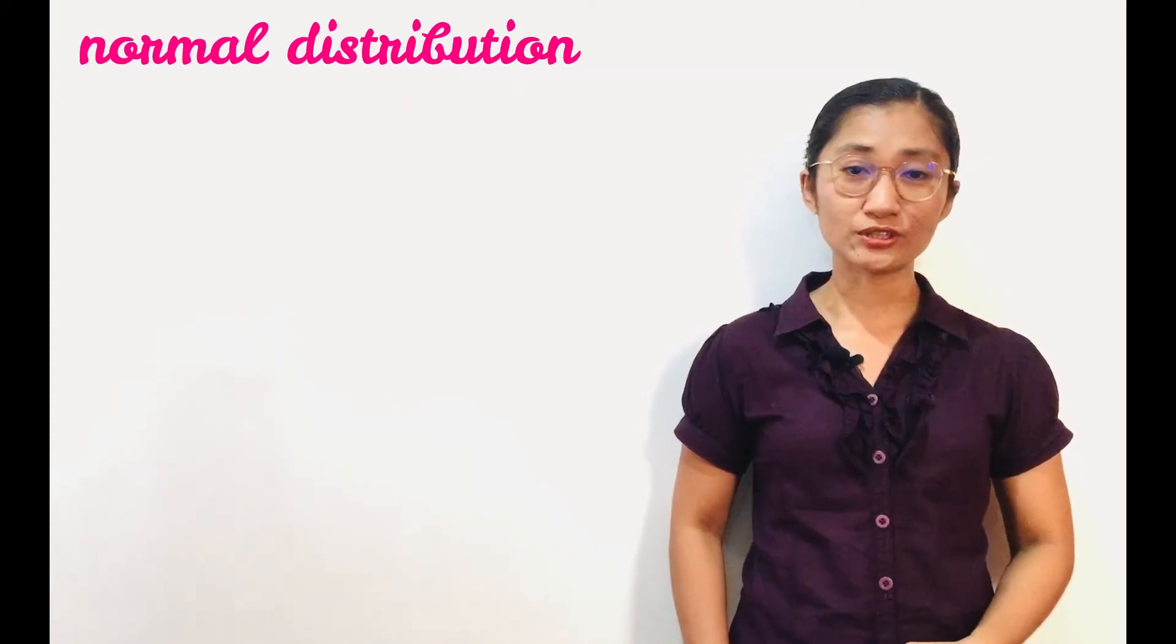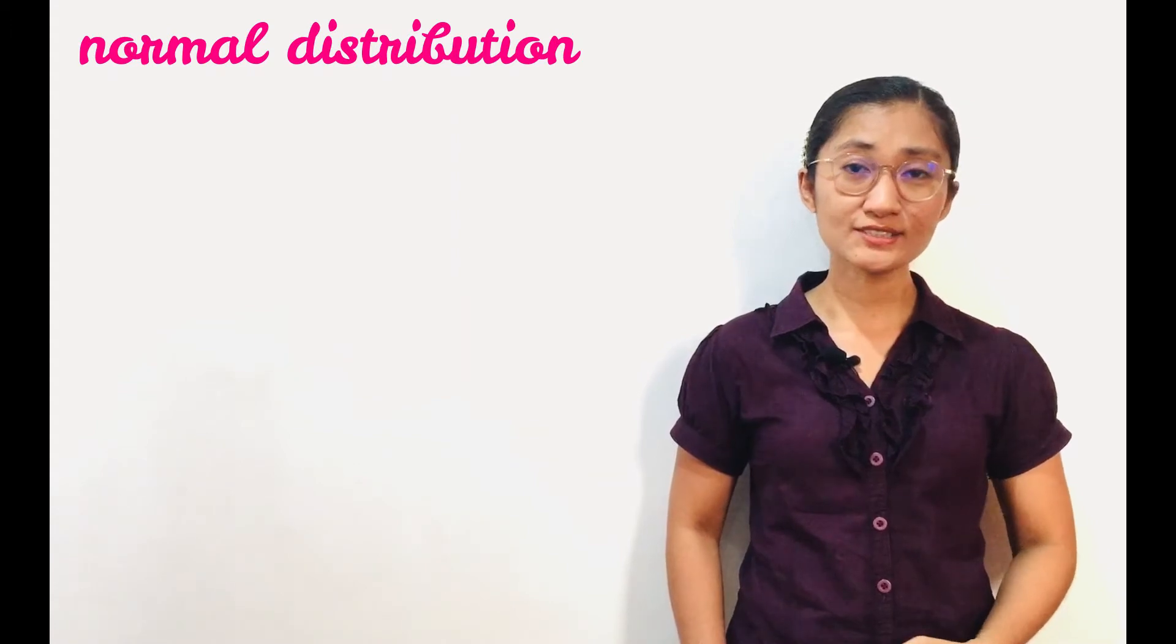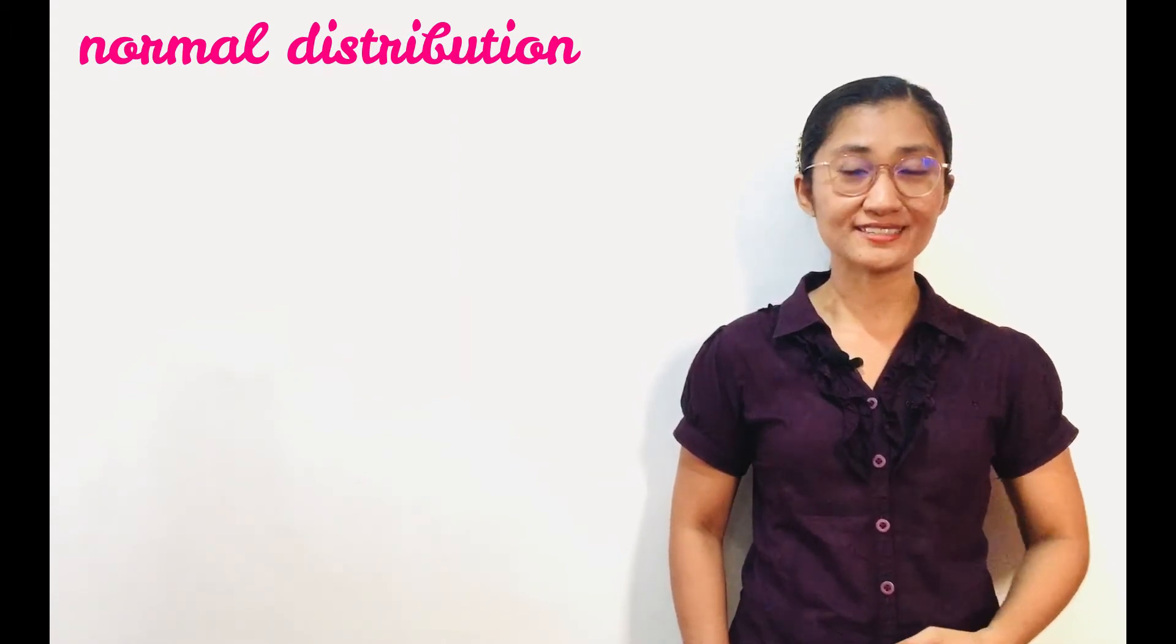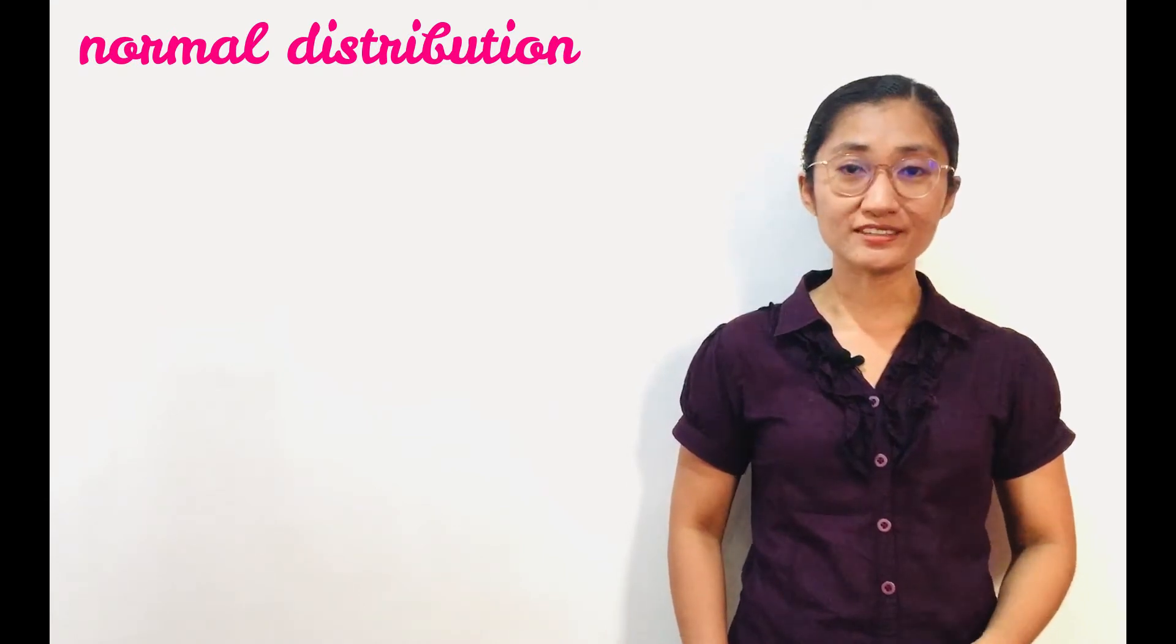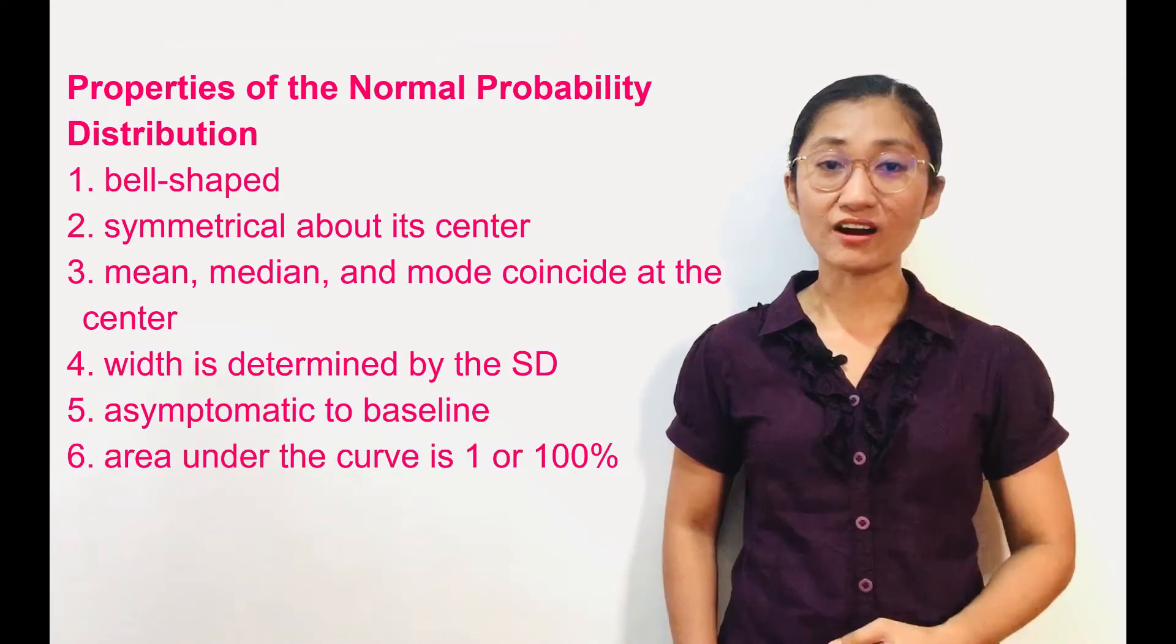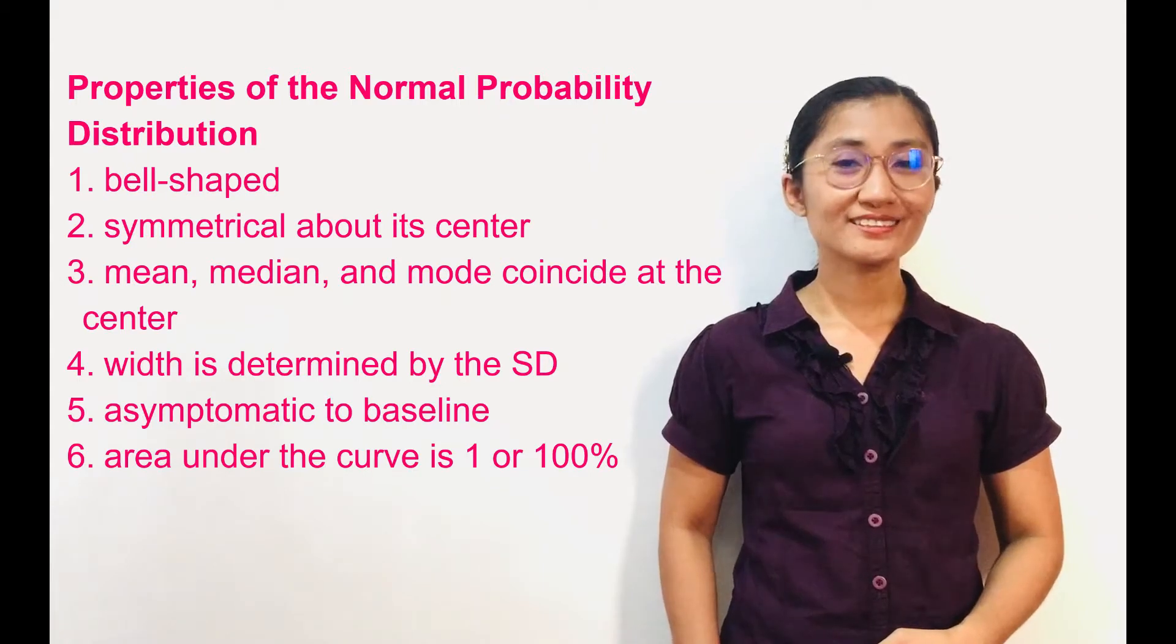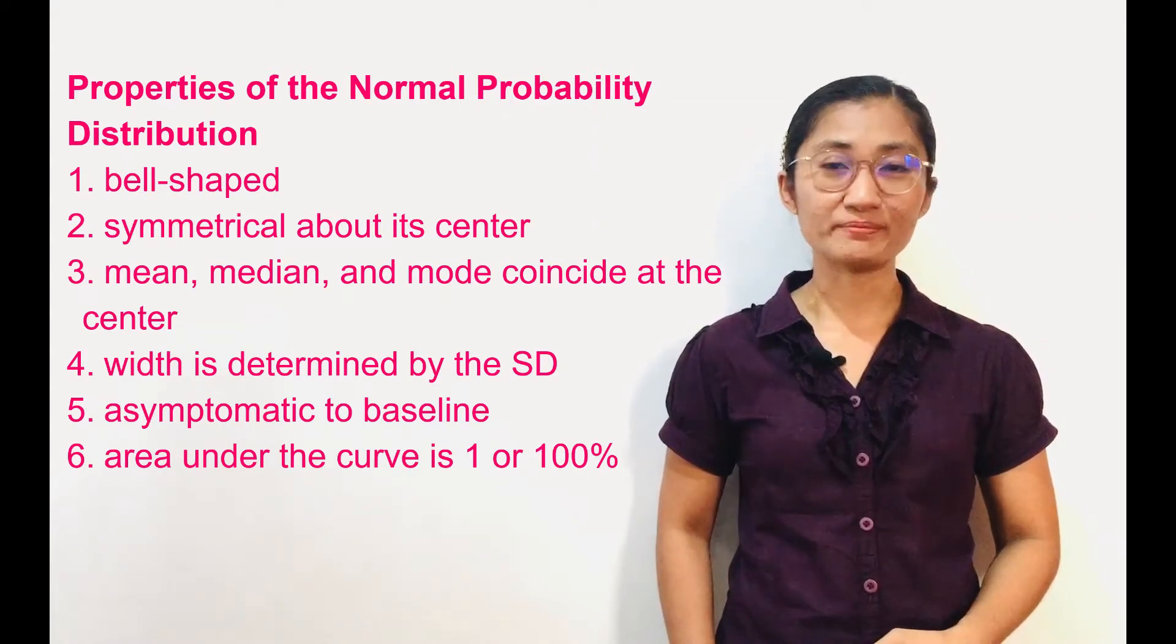Normal distribution or normal curve consists of a very large number of cases. The normal probability distribution has some properties. First, the distribution curve is bell-shaped.